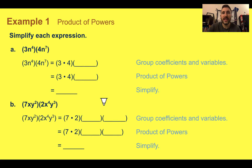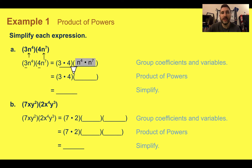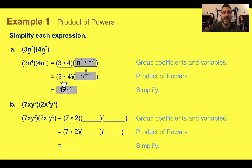Example one, product of powers — simplify each expression. We have 3n to the fourth times 4n to the seventh. The coefficient doesn't matter when deciding if they have the same base to add. We look at the variables. We're going to regroup: put 3 and 4 together, then group the n terms together. Using our product of powers, n to the fourth times n to the seventh would be n to the four plus seven. Three times four is 12, four plus seven is 11, so our final simplified answer is 12n to the eleventh.